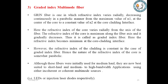Graded index multi-mode fiber. Graded index fiber is one in which the refractive index varies radially, decreasing continuously in a parabolic manner from the maximum value N1 at the center of the core to a constant value N2 at the core-cladding interface. The refractive index of the core is maximum along the fiber axis and gradually decreases; hence it is called a graded index fiber. The refractive index becomes minimum at the core-cladding interface, while the refractive index of the cladding is constant. The nature of the refractive index profile is parabolic. These fibers are now best suited for short-haul and medium-to-high bandwidth applications using either incoherent or coherent multi-mode sources.